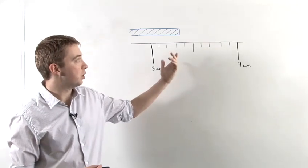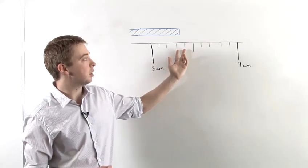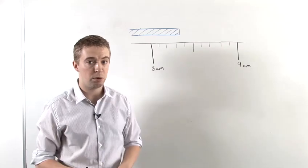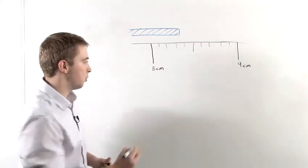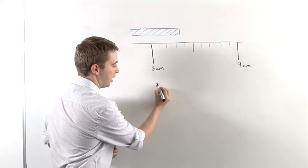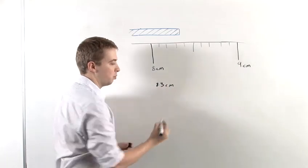So in this case, if we look at this, we could say that's either 8.3 or 8.4 centimeters. So let's look at where the uncertainty comes from. So let's say it was 8.3 centimeters.